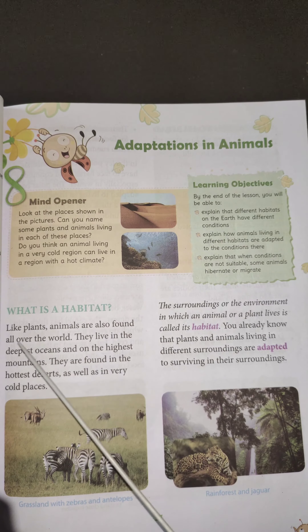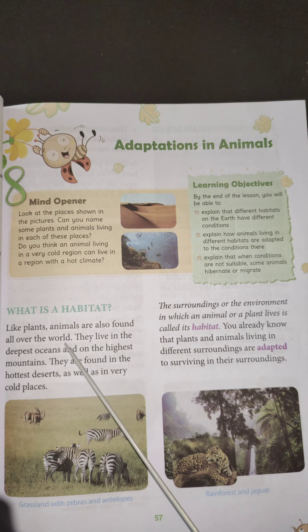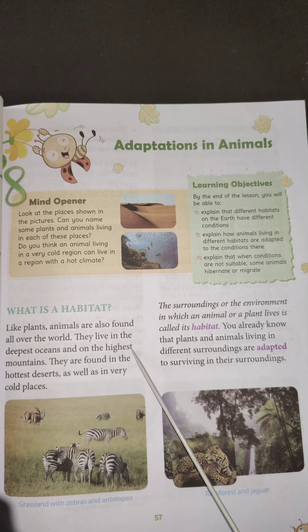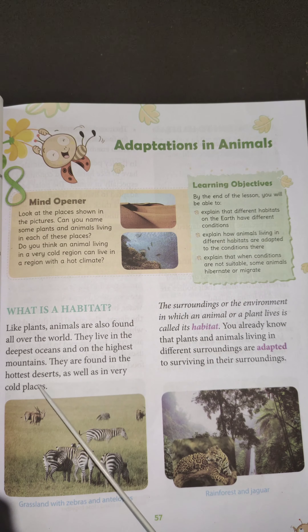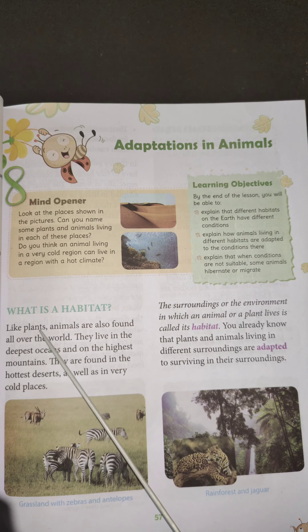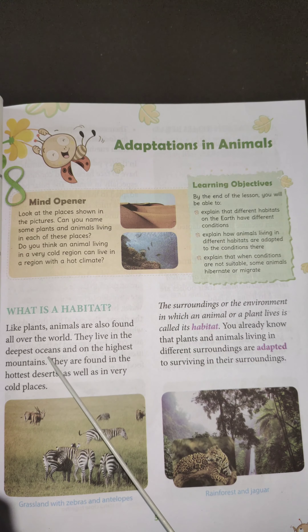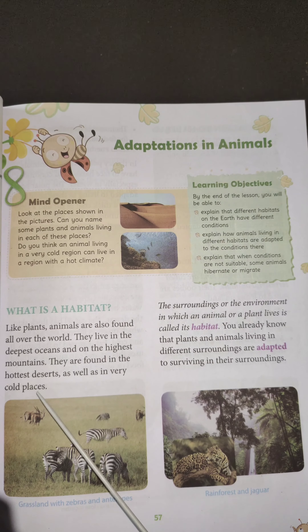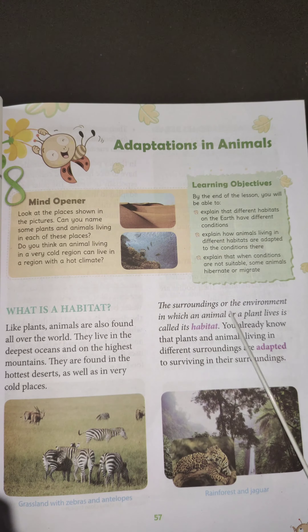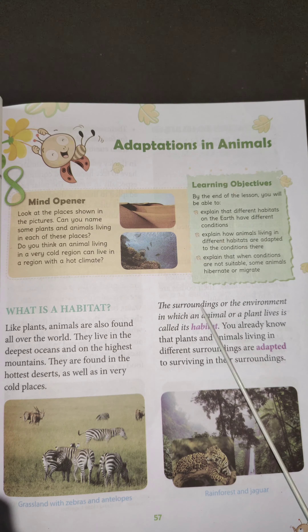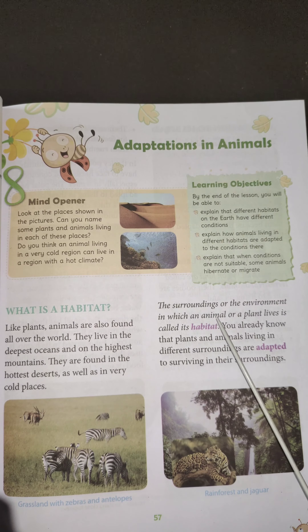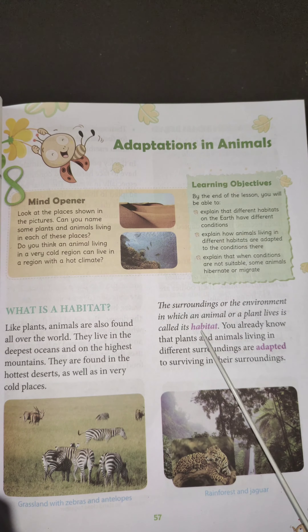Now, what is a habitat? Like plants, animals are also found all over the world. They live in the deepest oceans and on the highest mountains. They are found in the hottest deserts as well as very cold places. The surroundings or environment in which an animal or plant lives is called habitat. So in a very simple way, the place in which the animal or plant lives is called its habitat.